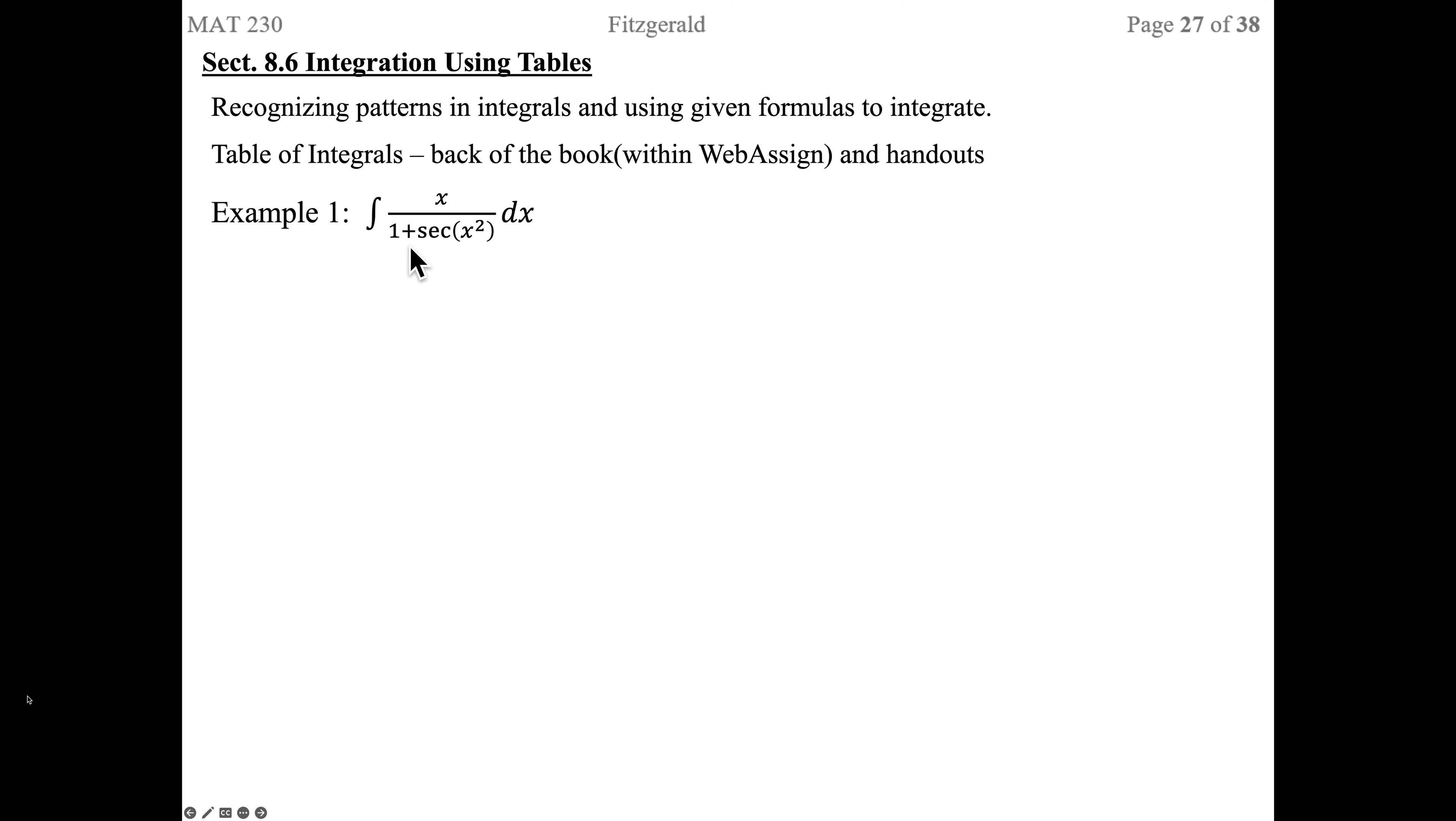Here we want to integrate X over 1 plus secant of X squared dX. I'm looking for something that says 1 plus secant of U in the denominator as you go through the list. Number 126, you have 1 over 1 plus or minus secant of U. So we'll do a U substitution here. Let U be X squared, DU will be 2X dX. We have the X in the numerator, so U substitution is good here. We'll have to divide by 2.